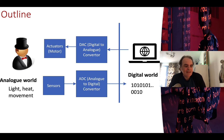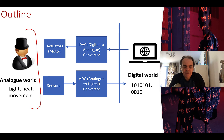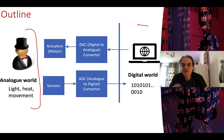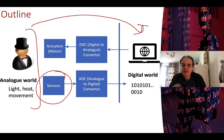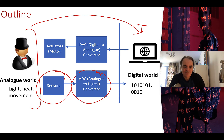We live in what could be defined as an analog world — a world which has variations in light, heat, movement, and so on. Within a digital world we have binary data, ones and zeros. Computers operate on this binary information using machine code, and our data is stored in a digital format. To bridge these worlds, we use sensors to sense the analog world and an analog-to-digital converter to convert that into digital form for storage and processing.